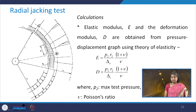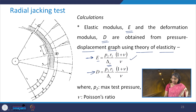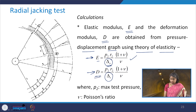The elastic modulus E and the deformation modulus D can be obtained from the pressure-displacement graph using the theory of elasticity. E = p2 × r2 / δE × (1 + ν) / ν. If you substitute the total deformation δt instead of δE, this expression gives the modulus of deformation.